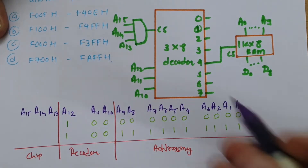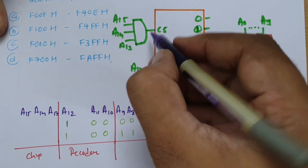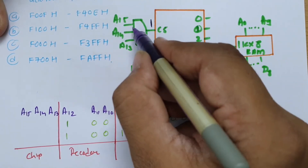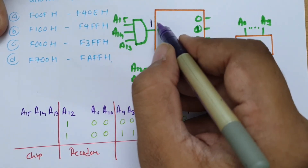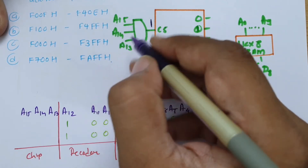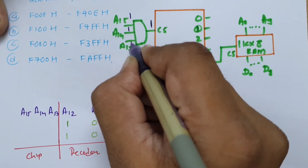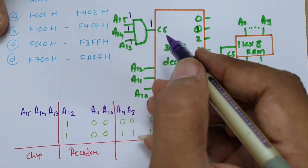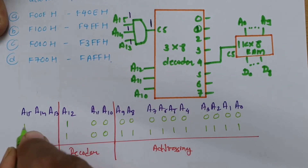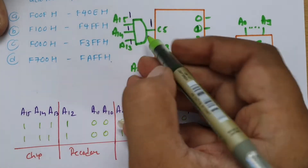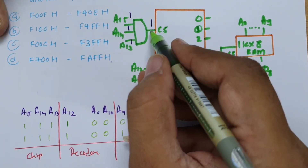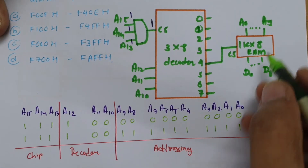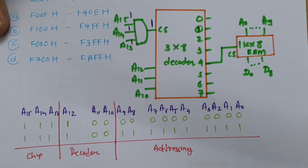Now we need to activate the chip select of the decoder. Since it is an active high chip select through an AND gate, all inputs must be 1. Therefore A13, A14, and A15 must all be 1 (i.e., 111). This gives us our starting and ending address for the RAM.